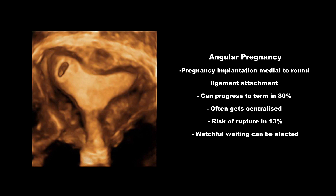However, there is a risk of catastrophic uterine rupture, seen in up to 13% of cases. In a diagnosed case of angular pregnancy, watchful waiting can be elected, as it is a potentially viable pregnancy that can progress to term in the majority of cases.